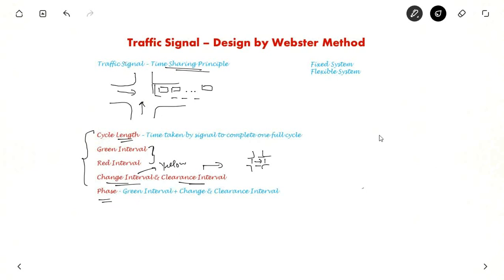What is a phase? So first, if suppose this side goes, all three directions are possible. So this is one phase. The second phase is like this. So there are four phases in a four-armed intersection. One phase is green interval plus change and clearance interval.